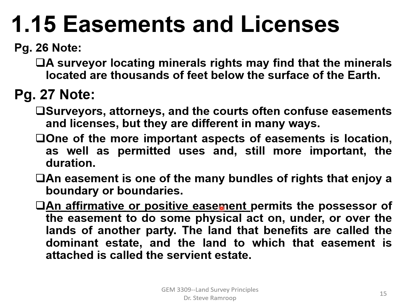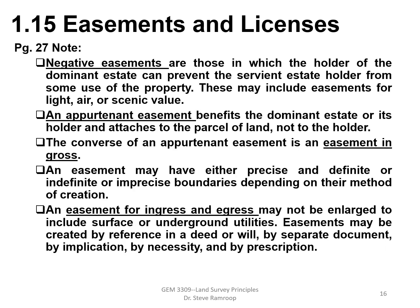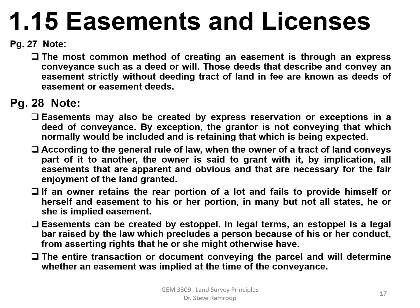The land that benefits from the easement is called the dominant estate. The person using someone else's land is the dominant estate holder. The land to which the easement is attached — where the owner is not getting full use because someone else is — is called the servient estate. You want to learn the terms dominant estate and servient estate.